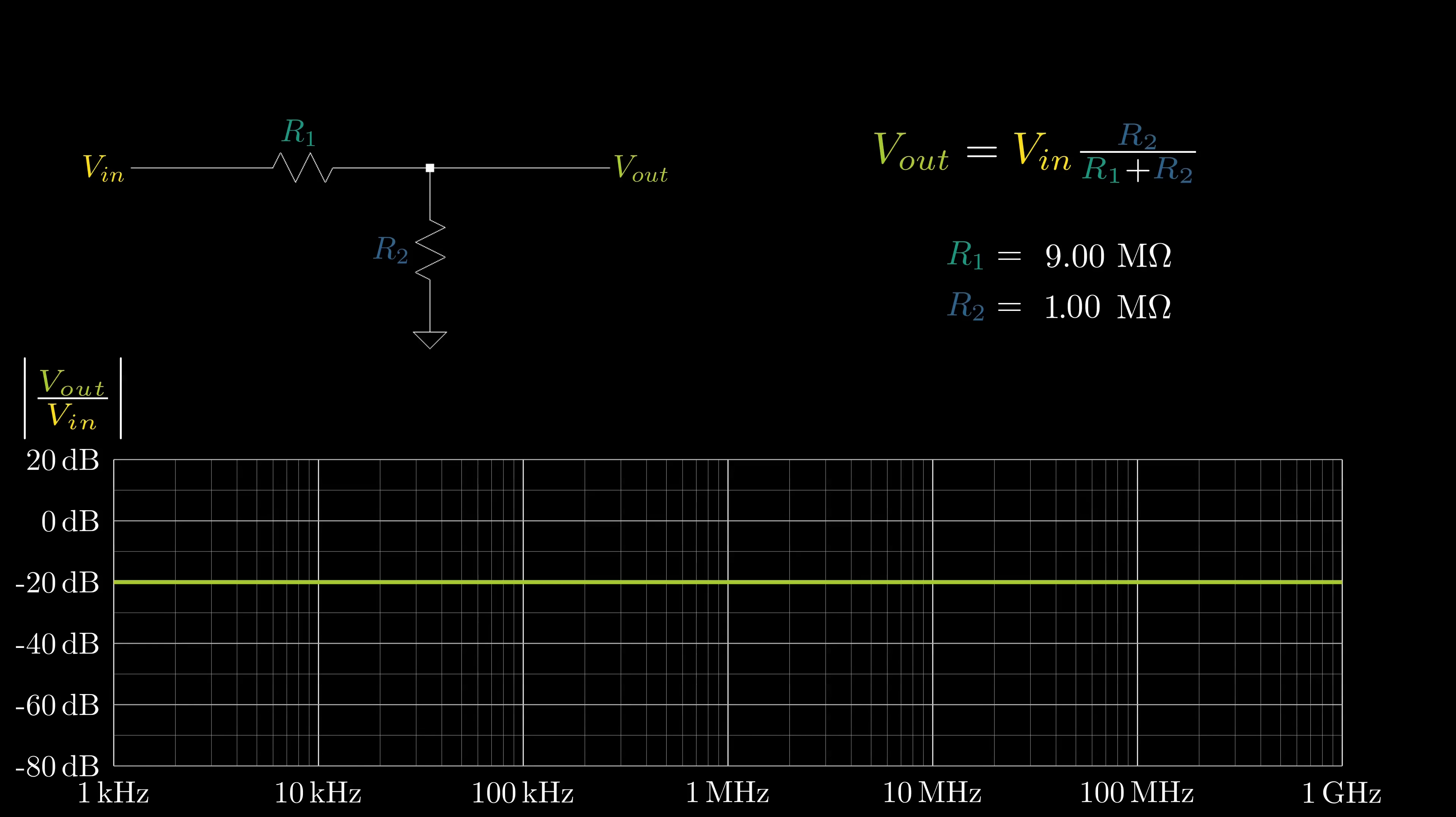When R1 is 9 megaohms and R2 is 1 megaohms, there's minus 20 dB of gain, or in other words, 10x attenuation. If Vin is 1 volt, Vout would be 10 times lower at 100 millivolts. In simple terms, the larger R1 is compared to R2, the more attenuation there is.